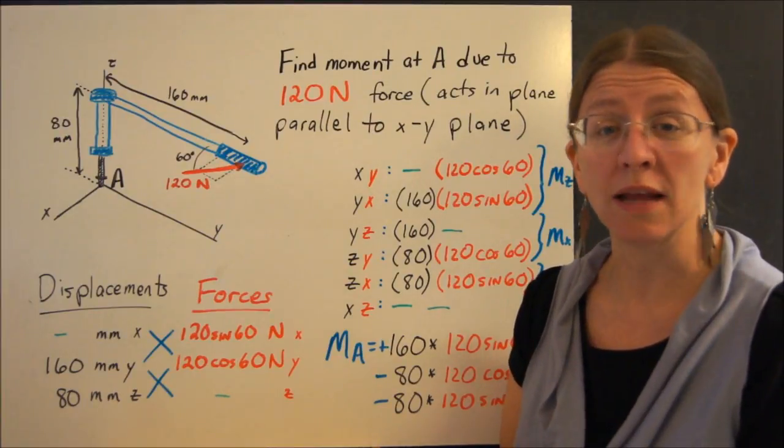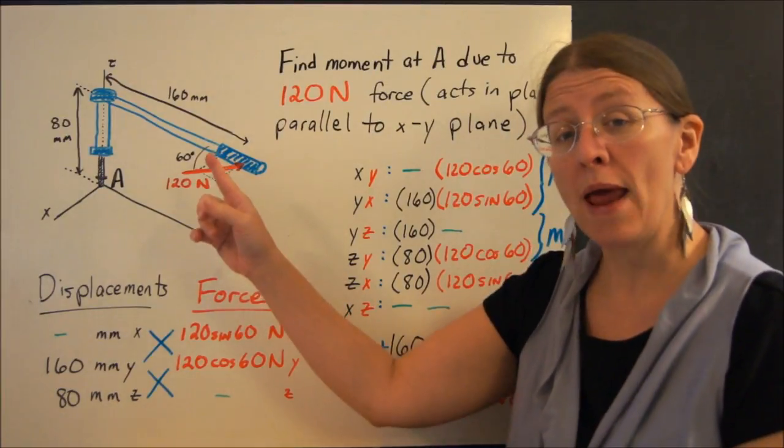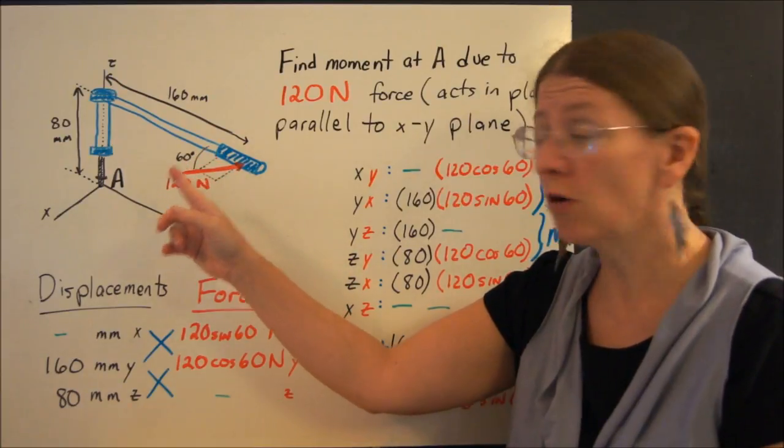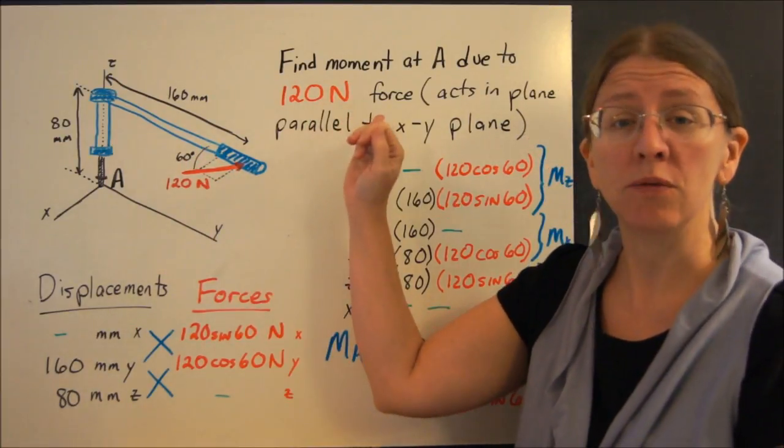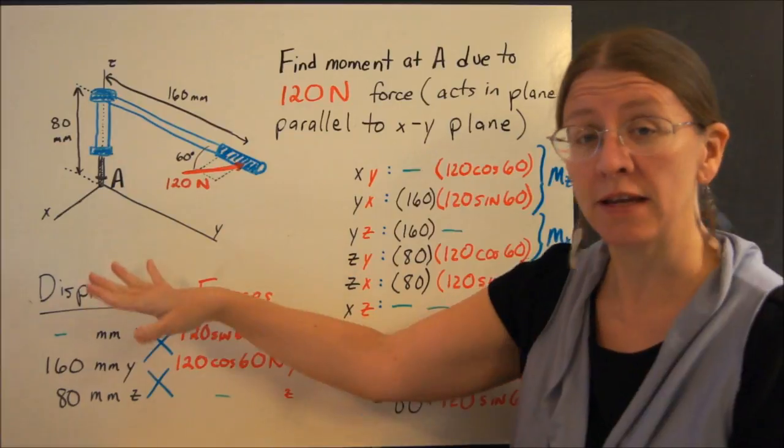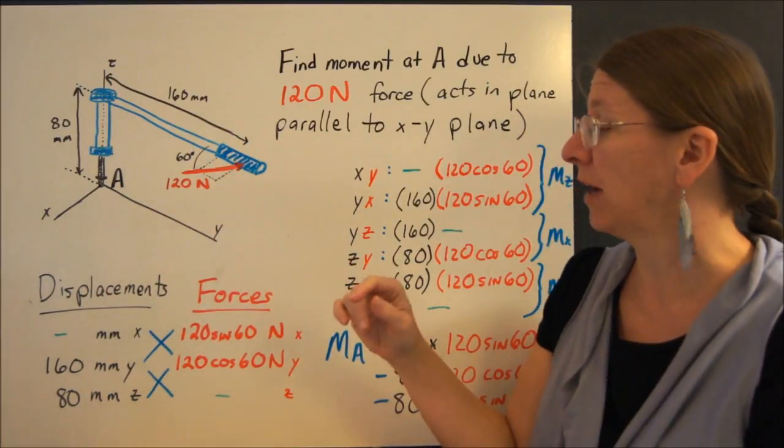So what does this one look like with the scalar method? Here's the same wrench that was in the problem we did with cross product, 120 newtons in a plane parallel to the xy plane, so it's at that 60 degree angle.